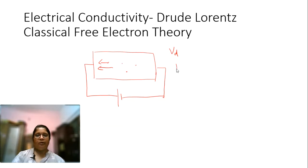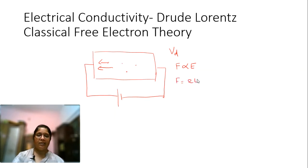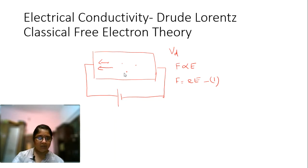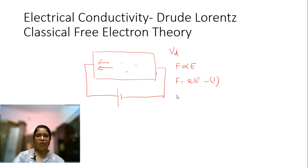Now we have to consider the force acting on the electrons. The applied force is proportional to the electric field. We say F is equal to eE — e is the charge and E is the electric field. This is equation 1. This applied force gives the electrons a drift velocity. Now, using Newton's second law, force is equal to mass into acceleration. This is equation 2.